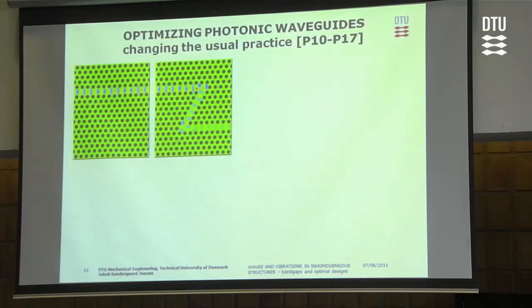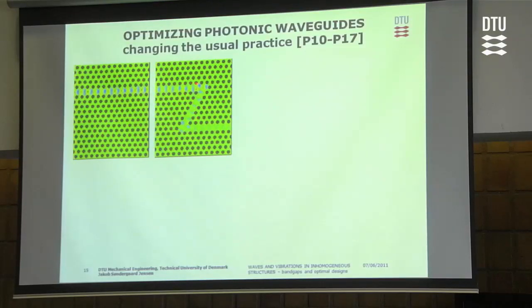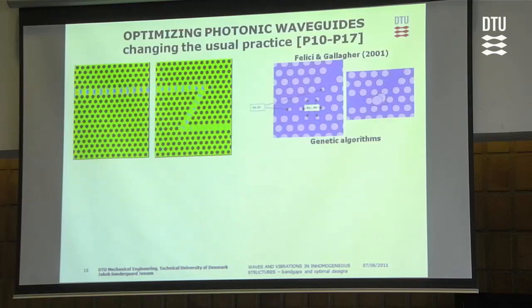We then changed setting by collaborating with the photonics department at DTU, applying this optimization technique to design photonic crystal waveguides. The problem with photonic crystal waveguides is that while propagation through the waveguide in the band gap material is nice, there are large reflections at bends due to the difficulty for waves to navigate around them. We wanted to optimize this to get better performance.